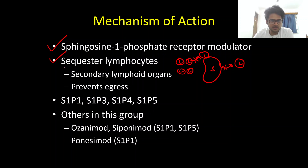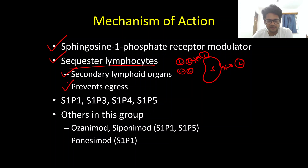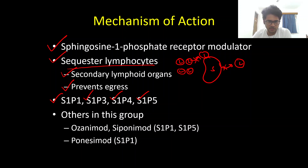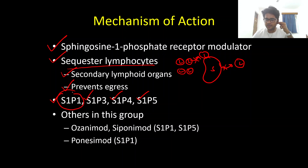So it sequesters lymphocytes by acting on the secondary lymphoid organs like the lymph nodes and spleen, preventing their egress and hence their entry into the central nervous system. There are many subtypes of the sphingosine 1-phosphate receptor: S1P1, S1P3, S1P4, and S1P5. These are the important subtypes that Fingolimod acts on, and it predominantly acts on S1P1.